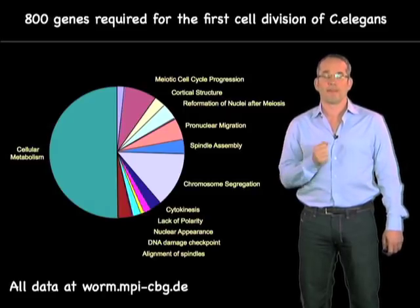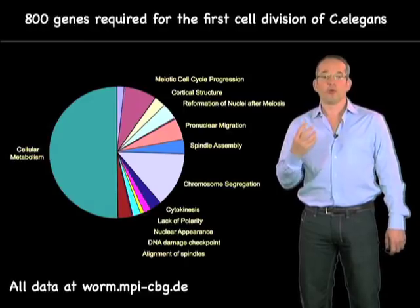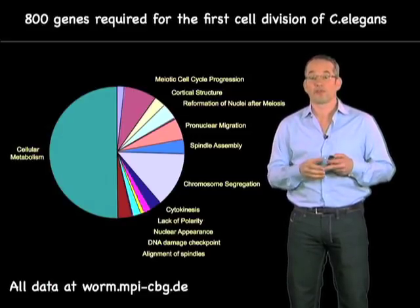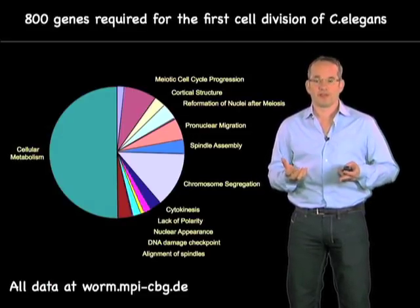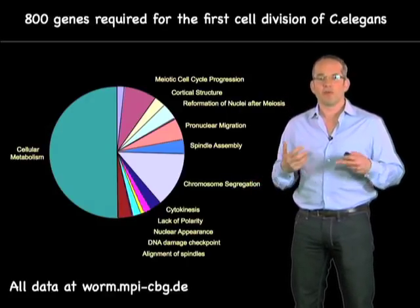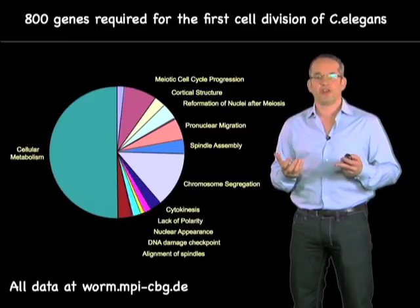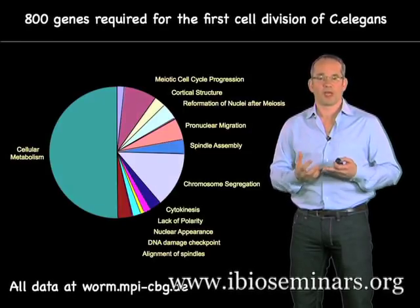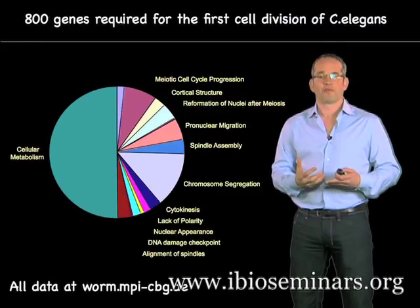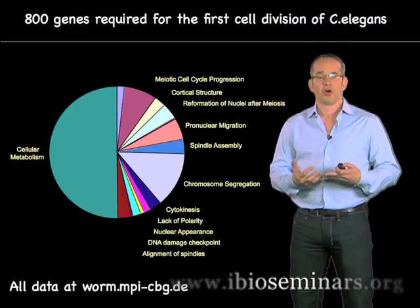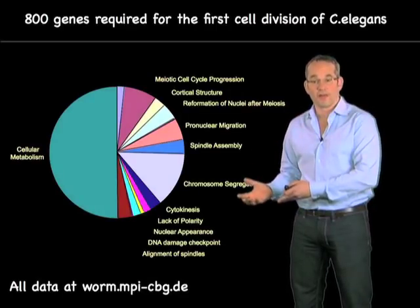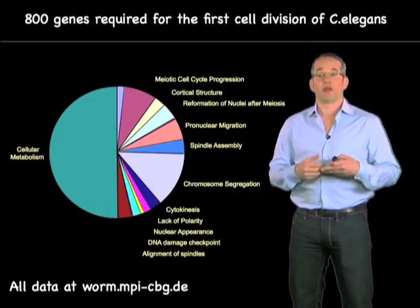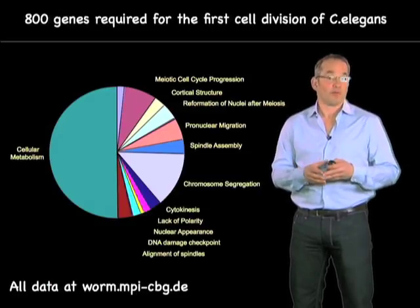For those interested, we put all the movies online at the website on the bottom of the slide. We were also able to divide up the genes into functional categories required for particular different purposes. But one of the questions that biologists now face is: this huge amount of information — how do we make sense of it? 800 genes is an enormous amount of data to work with. All we've done here is really create the catalog of genes — gene X is required for process Y — and that is powerful, but it doesn't tell us how the embryo itself is organizing and dividing.